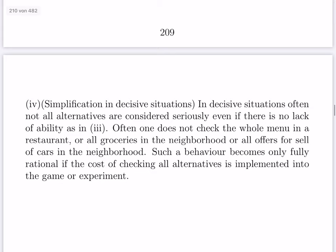Another situation: if one wants to buy a car, one usually does not go through all web pages of all car sellers within 100 kilometers. One makes some choice but is not very systematic. Similarly, if going to a restaurant or shop, one does not consider all alternatives. Such behavior is also not fully rational — it becomes fully rational only if the cost of checking all alternatives is implemented into the game, and then not being completely systematic is actually fully rational.